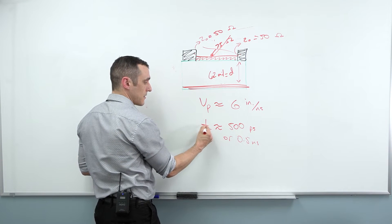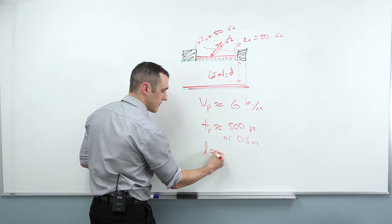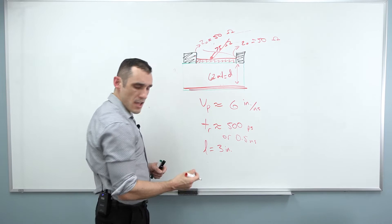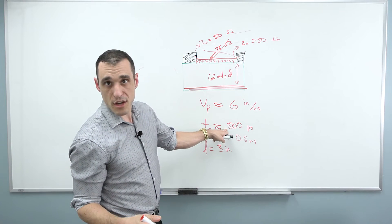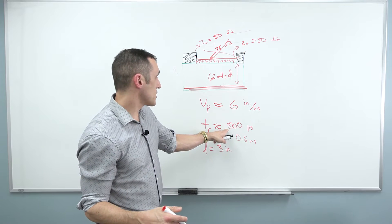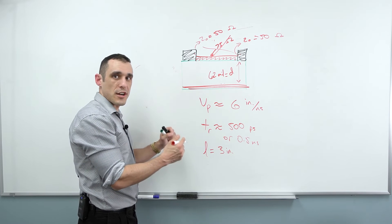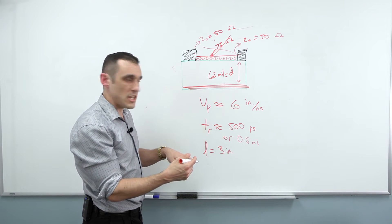But I'm gonna use the limiting value of 500 picoseconds or 0.5 nanoseconds. If I multiply this rise time by my propagation velocity, I get a length. So this times this gives me three inches. That means my signal with a rising edge of 500 picoseconds is gonna travel three inches during this rise time.